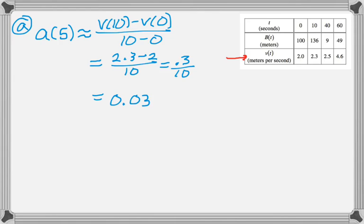And then if you look at the units, we've got meters per second divided by seconds, so that'll give us meters per second squared, and that is part A.